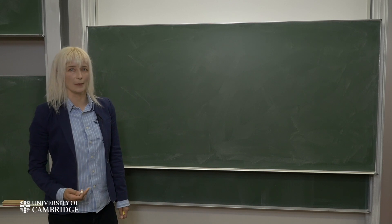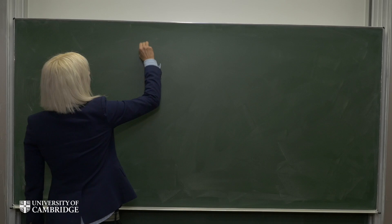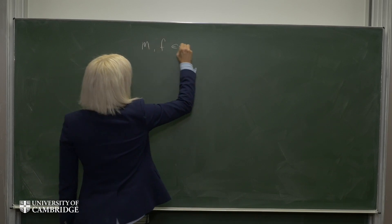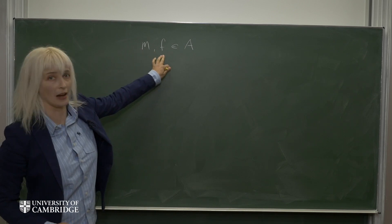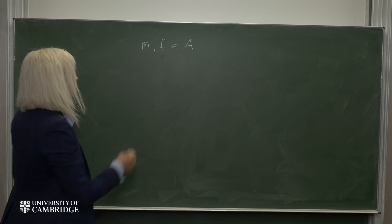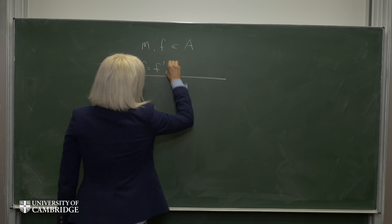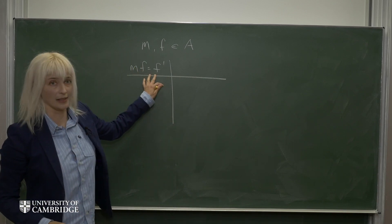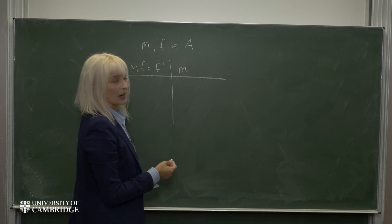So let's say we have two elements, M and F, which are just elements of some algebra A. Then I can left multiply M onto F, and that will give me some new F prime, which is also an element of A. In this way, I can think of M as a map from F to F prime.